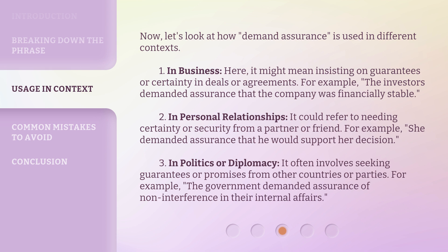Two, in personal relationships, it could refer to needing certainty or security from a partner or friend. For example, she demanded assurance that he would support her decision. Three, in politics or diplomacy, it often involves seeking guarantees or promises from other countries or parties. For example, the government demanded assurance of non-interference in their internal affairs.